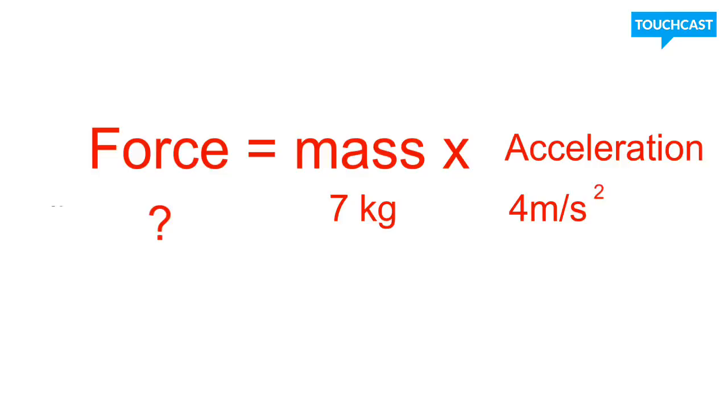So let's go ahead and look at this mathematically. If we had an object that weighed 7 kilograms and it was moving at an acceleration of 4 meters per second squared, how much force would it hit with? Well the equation simply says you just multiply the two together and it would have a force of about 28 newtons.